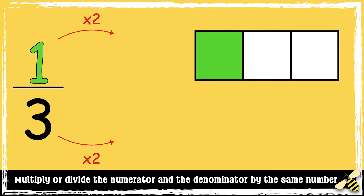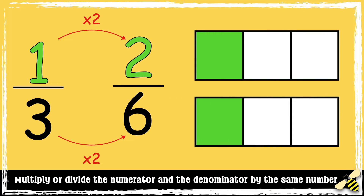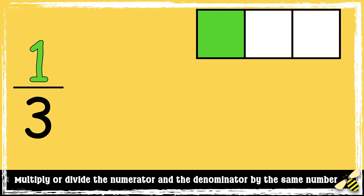Here is the fraction 1/3. If I multiply the numerator by 2, I also have to multiply the denominator by 2. So 1 times 2 is 2, and 3 times 2 is 6 — so 1/3 is equivalent to 2/6.